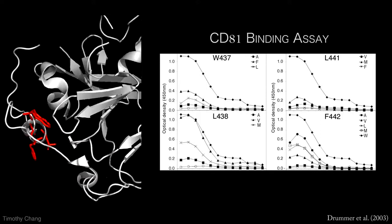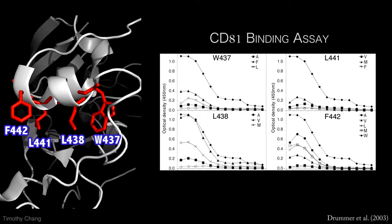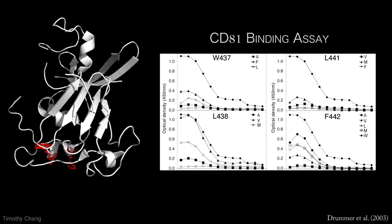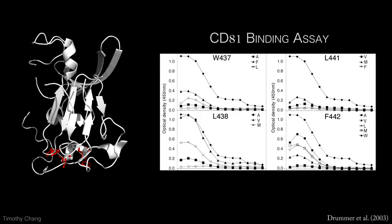mutations of W437, L438, L441, and F442 resulted in a significant loss of CD81 binding, indicating that these residues play a direct role in the interaction.